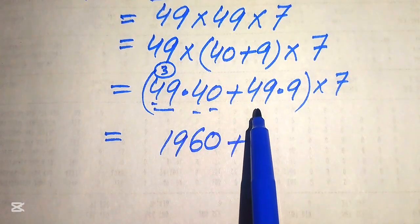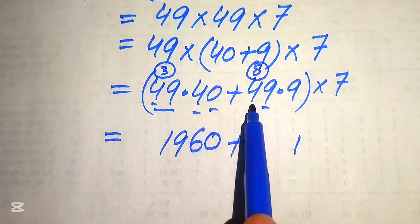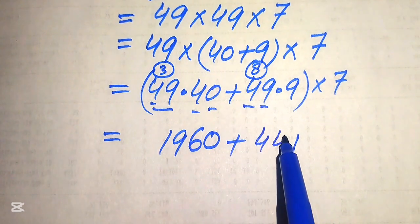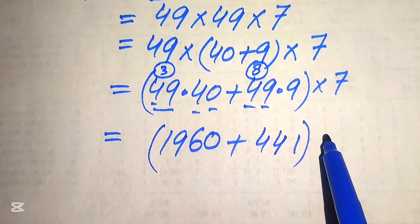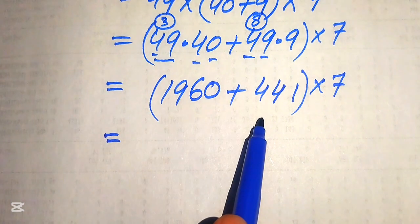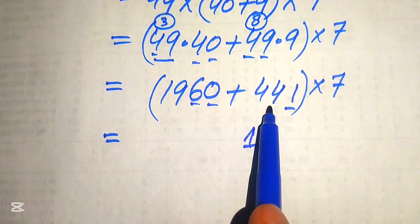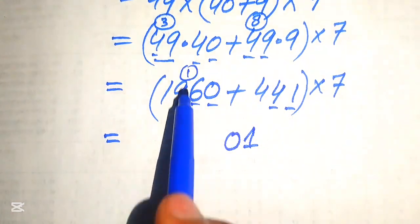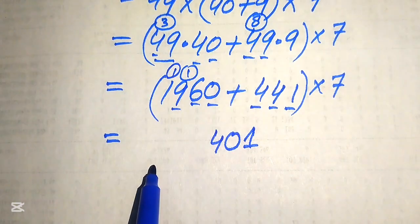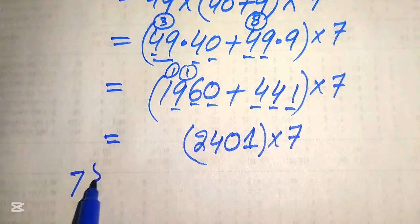In the same pattern, we multiply 9 by 49: 9 nines are 81, write 1 carry 8; 9 fours are 36, plus 8 becomes 441. Now we add the two results: 1960 plus 441. Working through: 0 plus 1 is 1; 6 plus 4 is 10, write 0 carry 1; 9 plus 4 is 13, plus 1 is 14, write 4 carry 1; 1 plus 1 is 2. This gives us 2401, and this result is multiplied by 7.